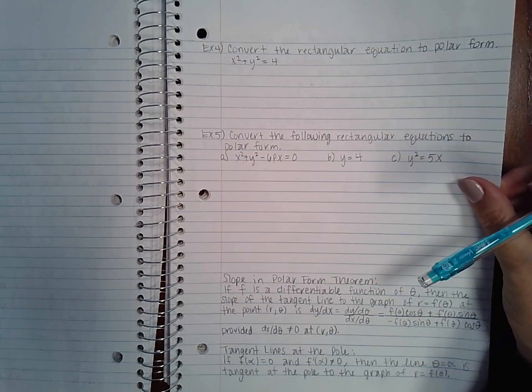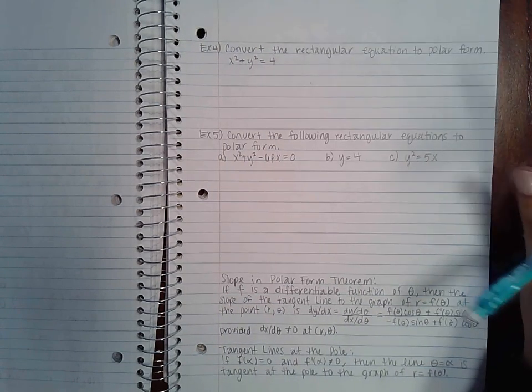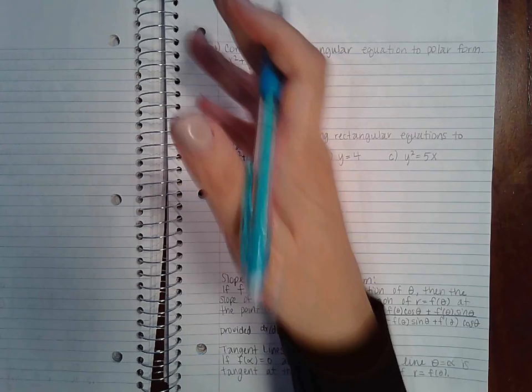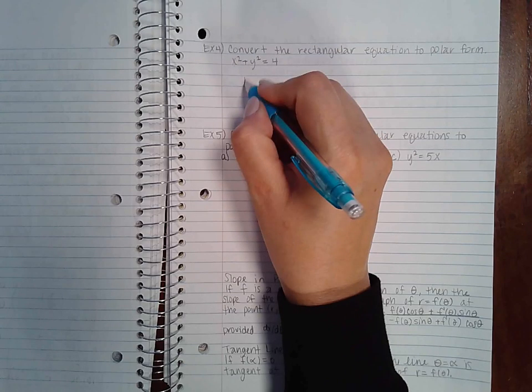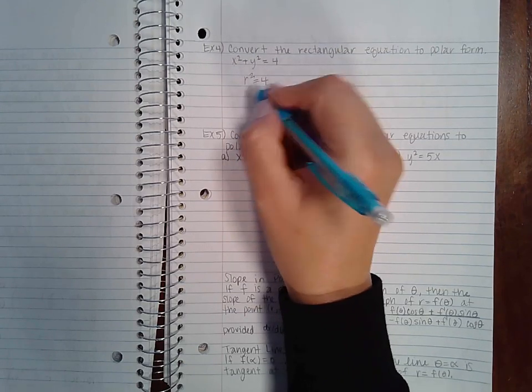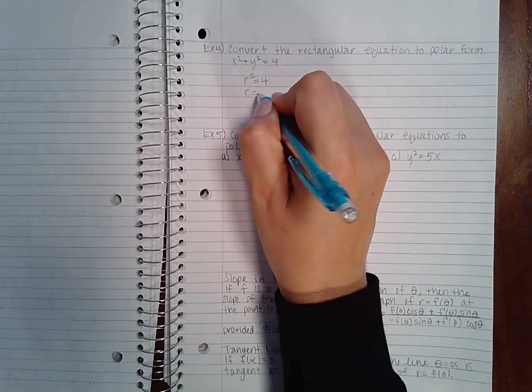So this is 10.4 part two. It says convert the rectangular equation to polar form. So we know that x squared plus y squared equals r squared, and if we take the square root of this we get that radius is equal to four.